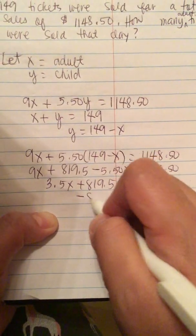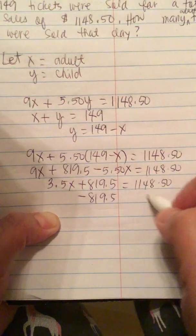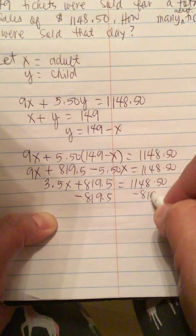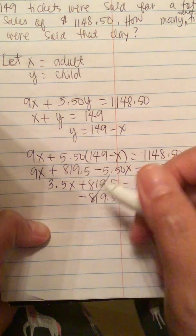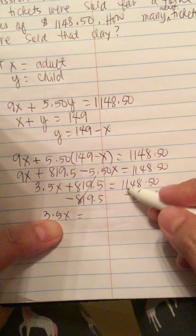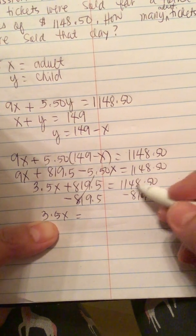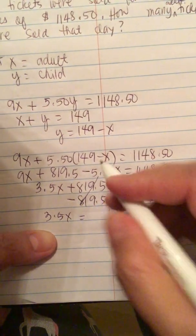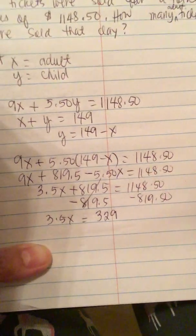We subtract 819.50 from both sides of the equation. Here it's gone. We have 3.50X equals $1,148.50 minus 819.50, which equals $329.